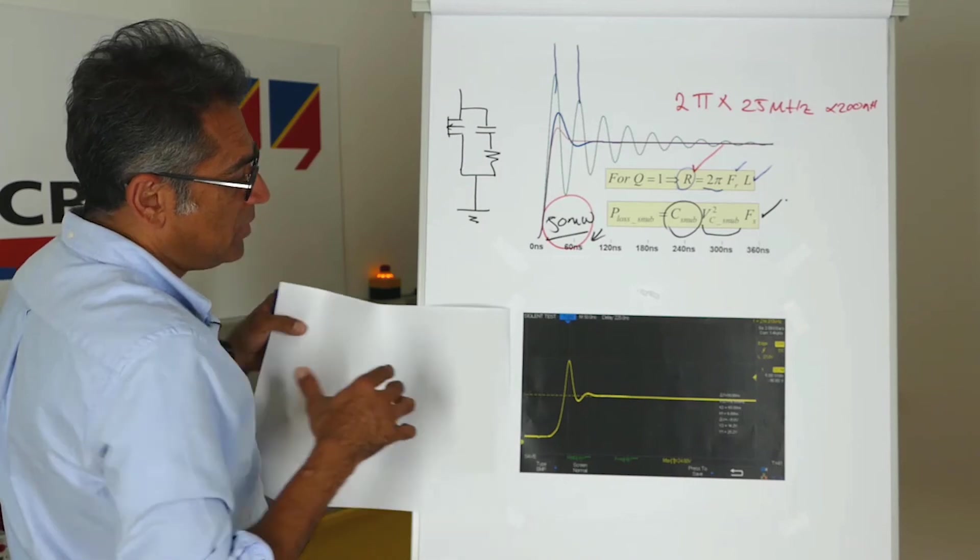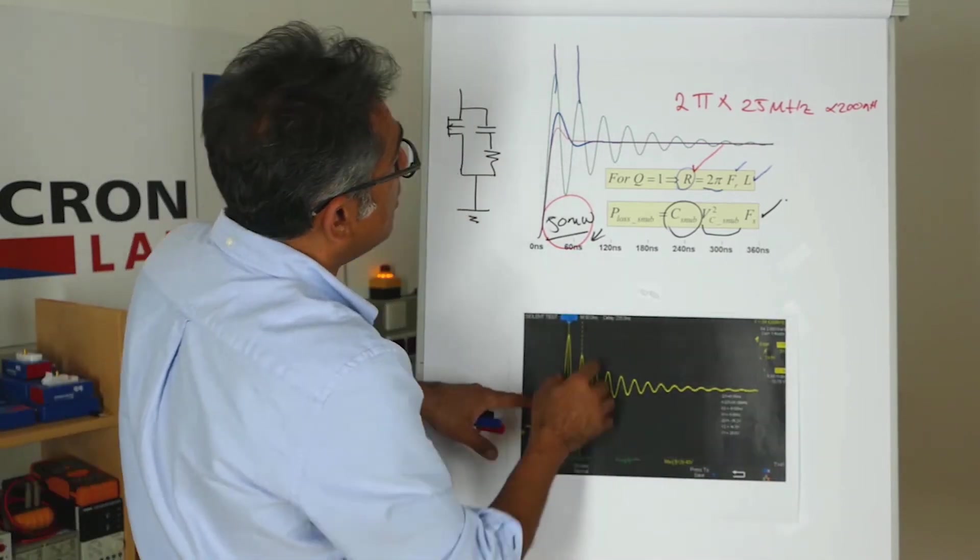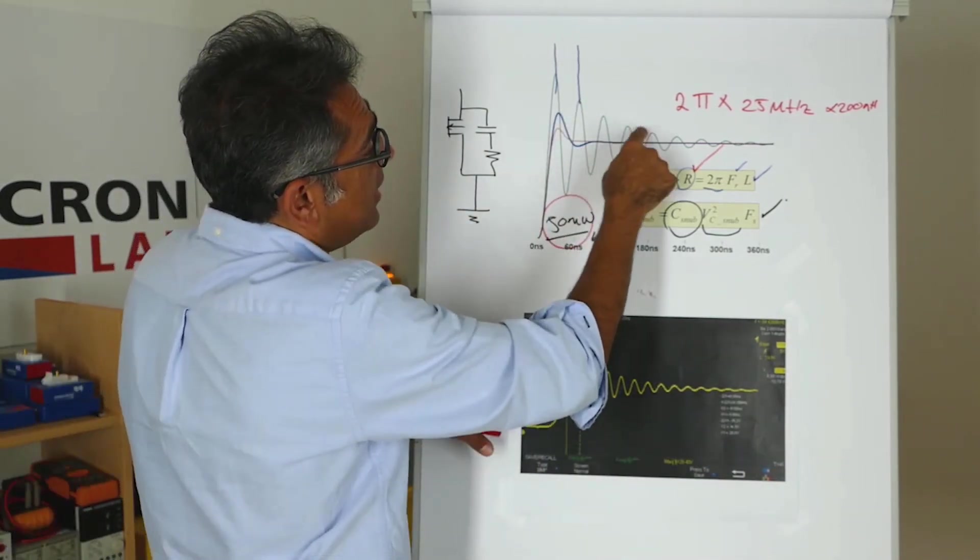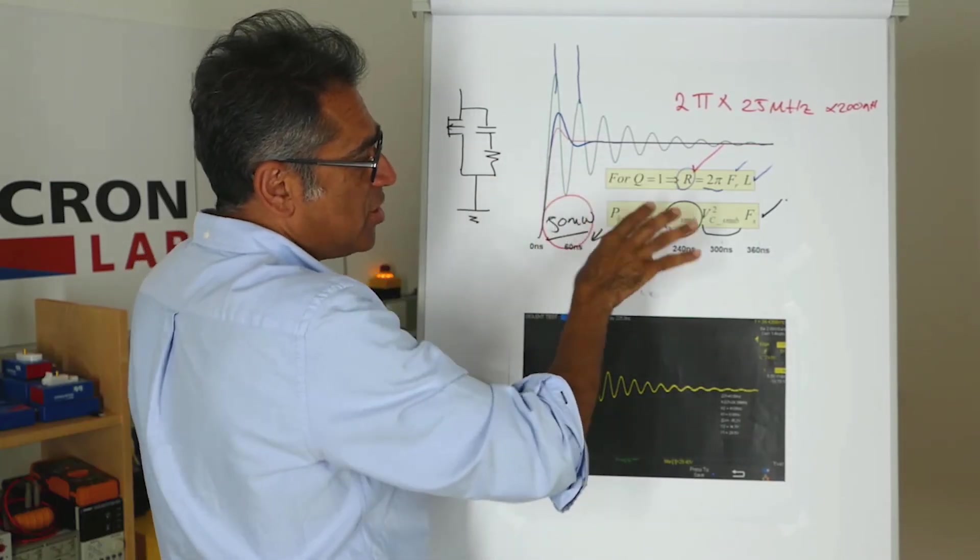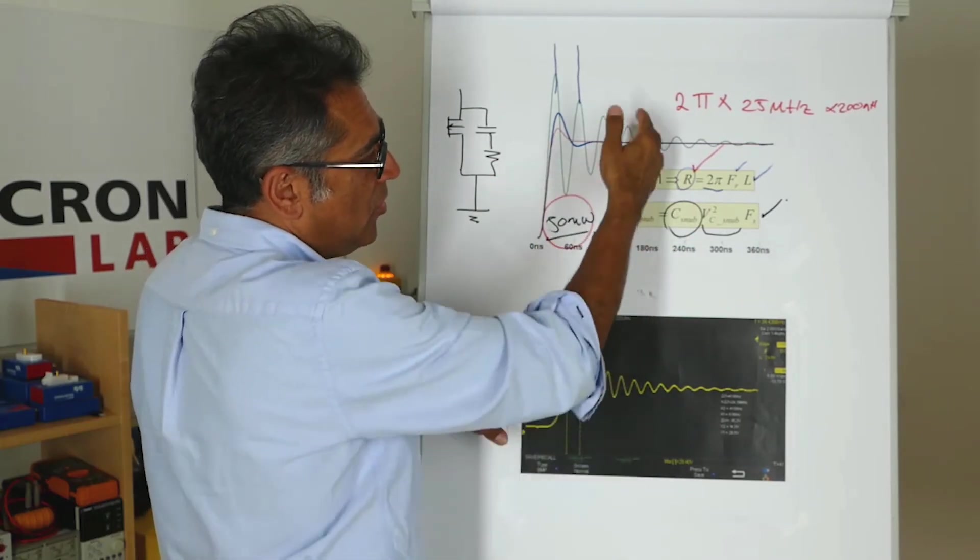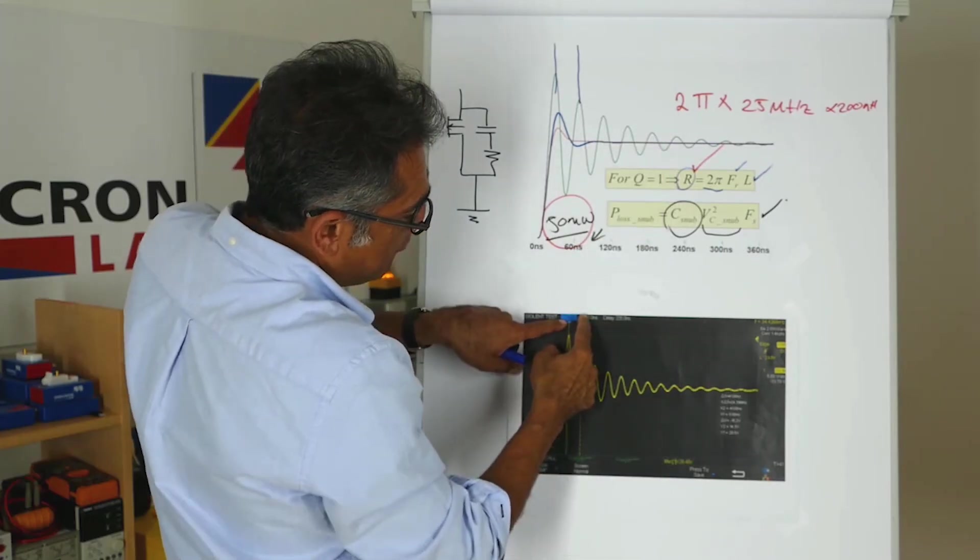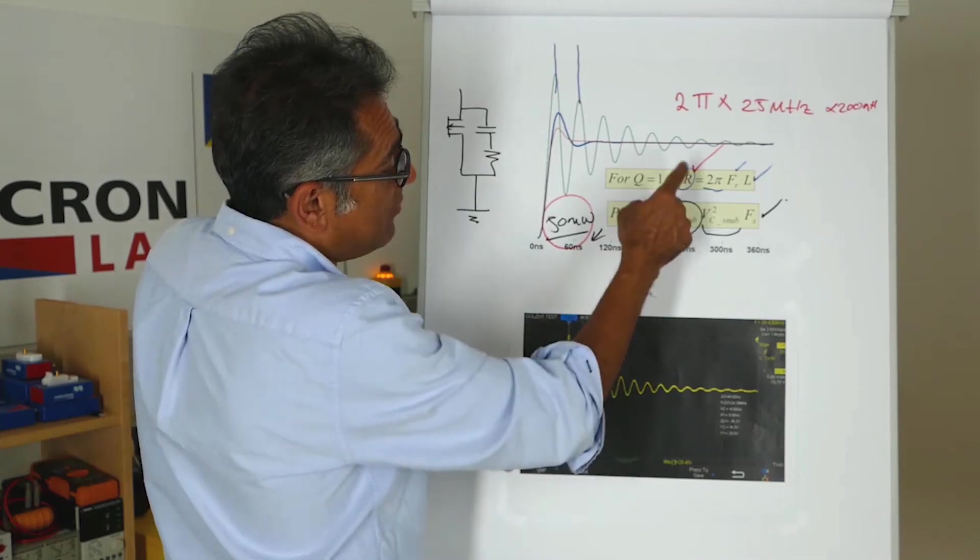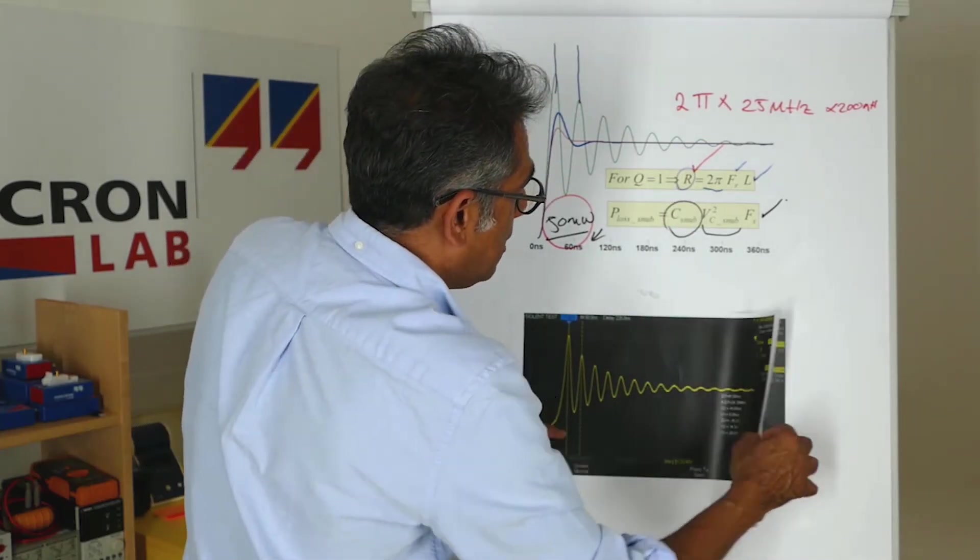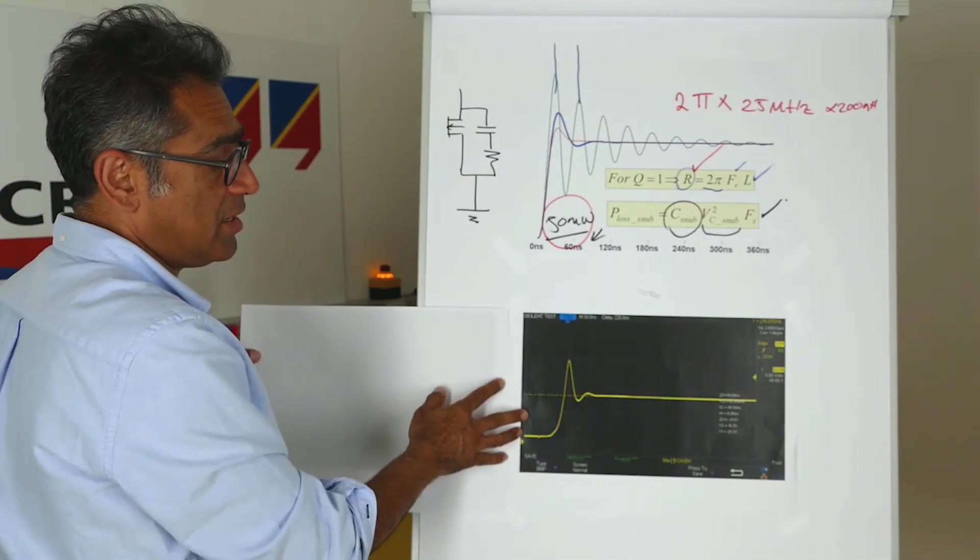So please compare the green trace, whereby there is very little snubbing, this is just dissipating naturally with the parasitic resistances on the circuit, to this. I have measured the ringing frequency, I've calculated everything, and this is the one after it has been snubbed.